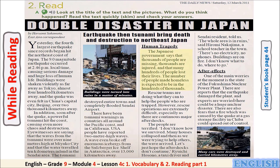'Human Tragedy: The Japanese government says that thousands of people are missing, thousands are injured, and that many hundreds of people lost their lives. The number of people made homeless is expected to be in the hundreds of thousands. Rescue teams are doing what they can to help the people who are trapped. However, rescue operations are extremely difficult, especially as there are continuous major aftershocks. The people are terrified. "I don't know how we survived — many houses collapsed, and then as we were trying to help others, the wave arrived. Let's just hope the aftershocks don't continue," Raiuchi Hozono, a taxi driver and Sendai resident, told us.'